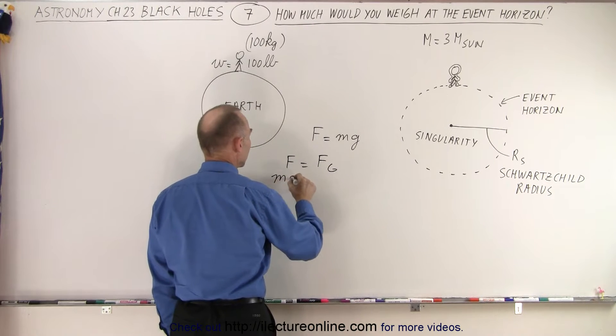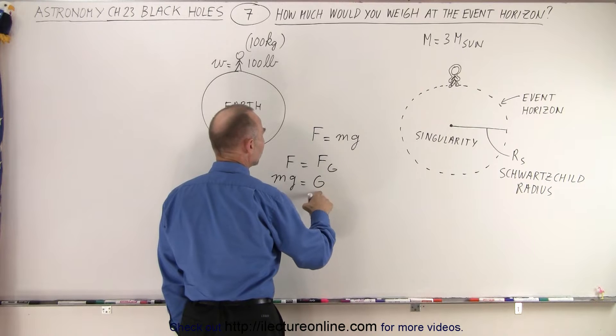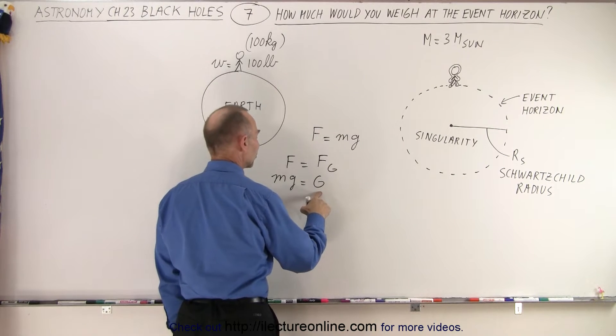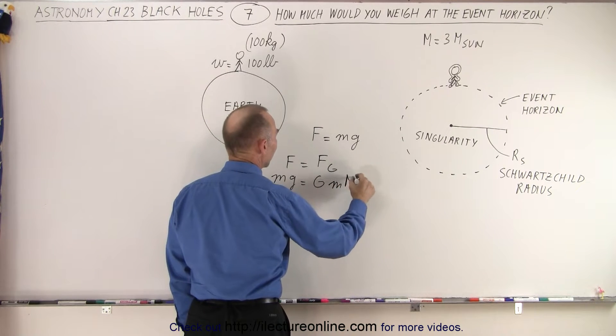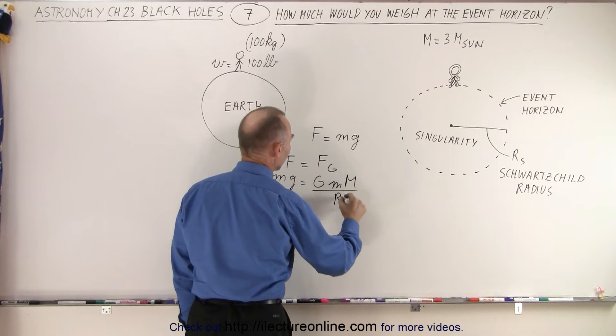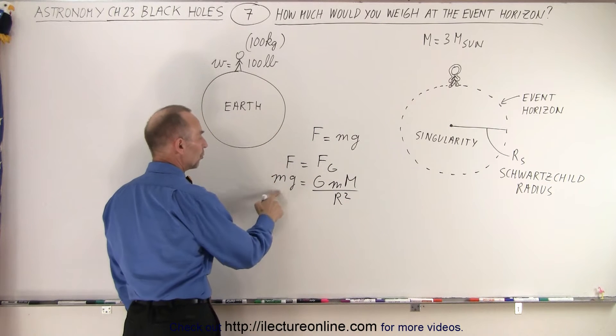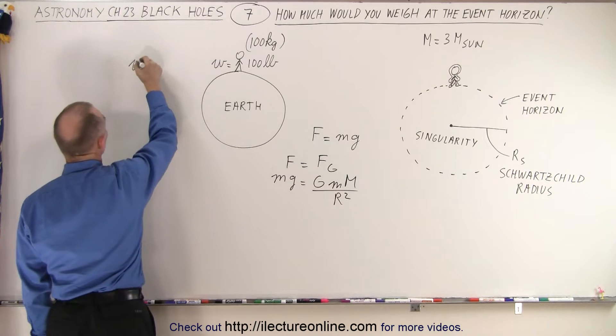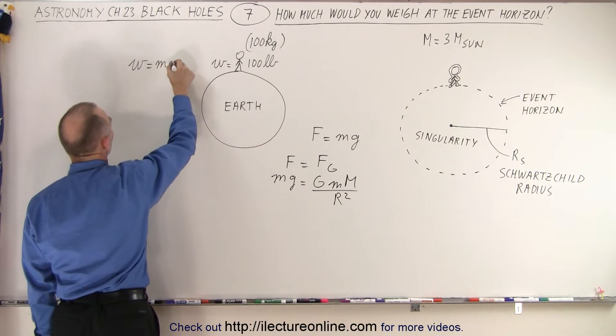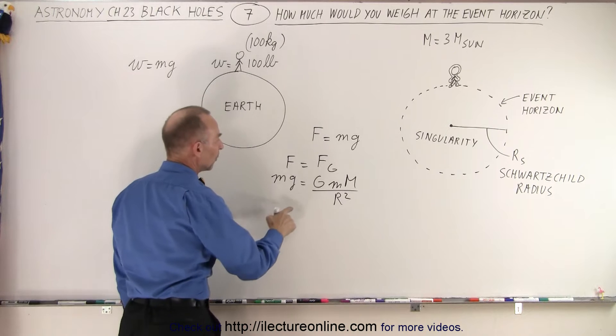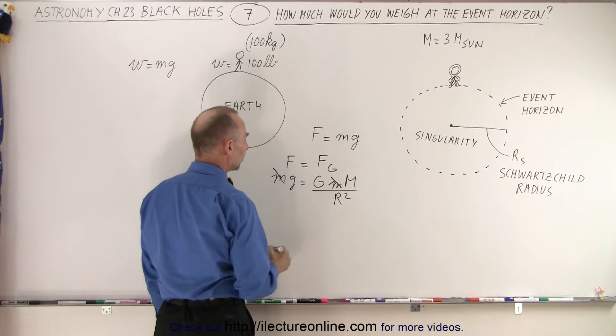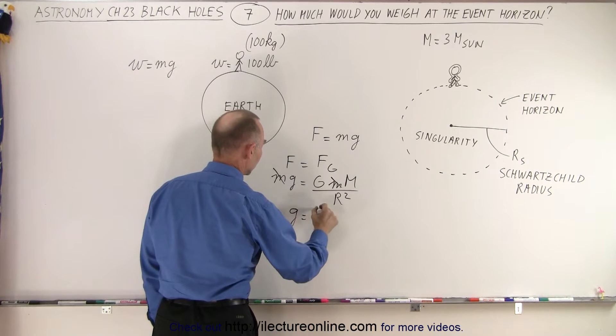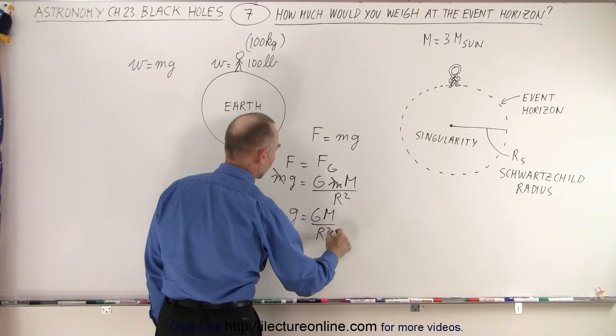and so we can calculate G, which goes into your weight because we know that weight is equal to mass times G, like this, so we can cancel M on both sides, and we can say that G is equal to GM over R squared